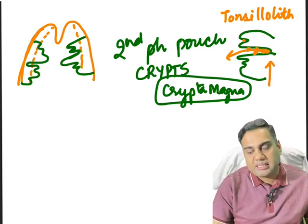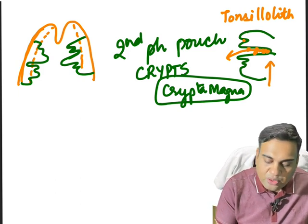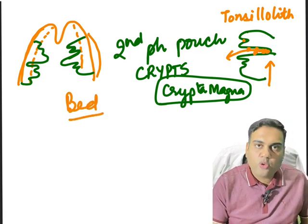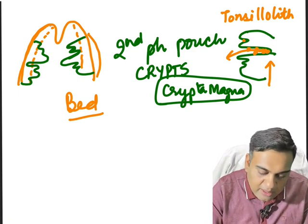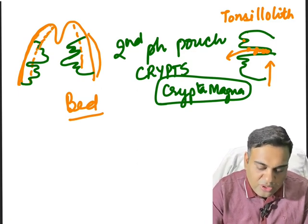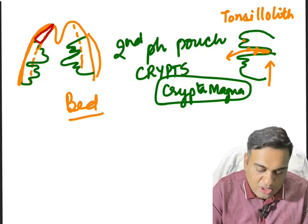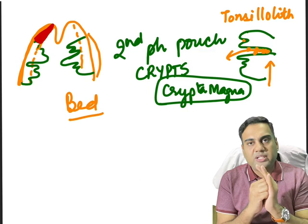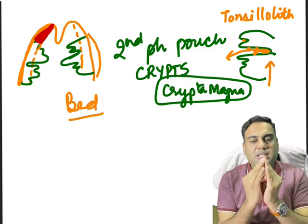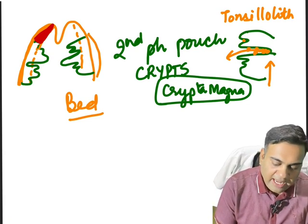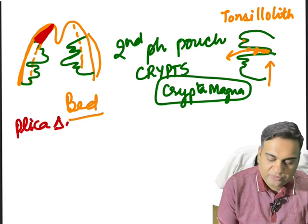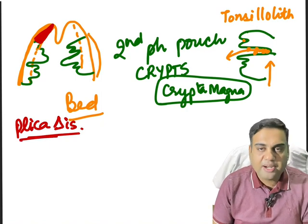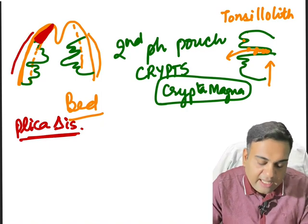Lateral to the crypt is the tonsillar bed. The tonsillar fossa has an anterior pillar and posterior pillar. The triangular fossa above the tonsil is called plica triangularis — or plica semilunaris if semilunar — and behind the tonsil is the tonsillar bed.